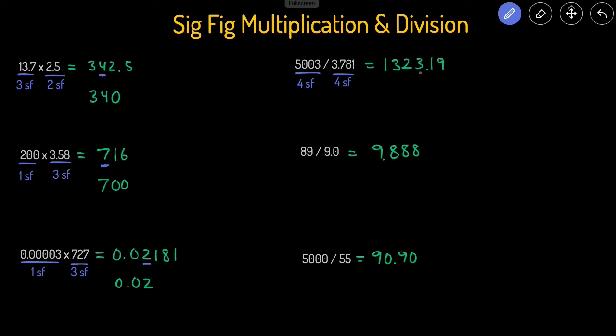Let's underline the fourth number: one, two, three, four. That's a three. Look at the number next to it. Again, we're not going to round, so this is going to stay as 1323.